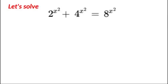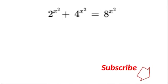Hello and welcome back to Maths Plus. Today we have an exponential equation: 2 to the power of x squared plus 4 to the power of x squared is equal to 8 to the power of x squared. We're going to solve this, so before we start don't forget to pause the video and try it yourself.